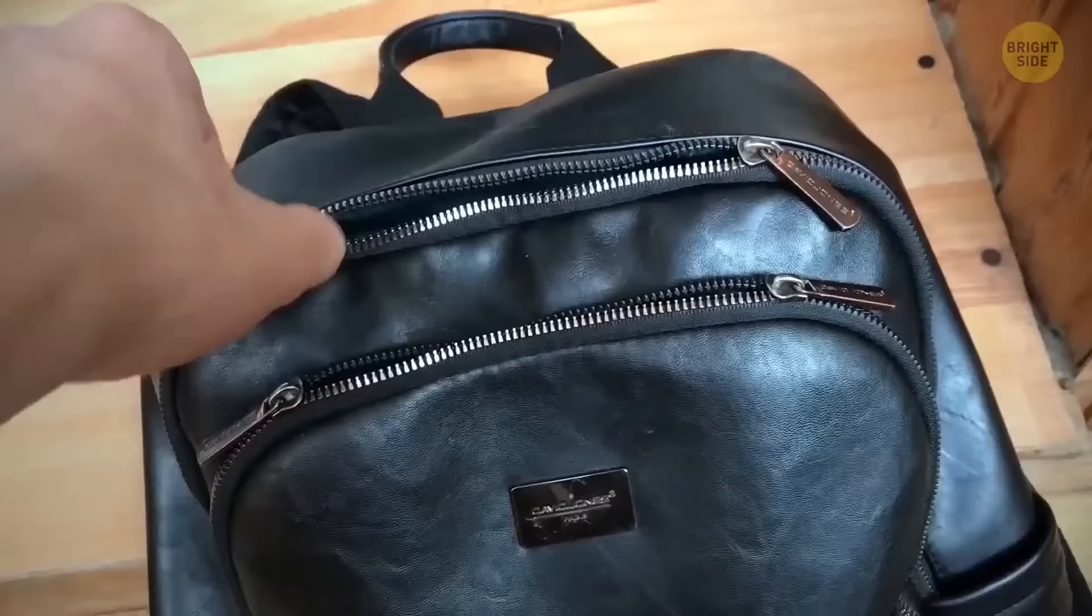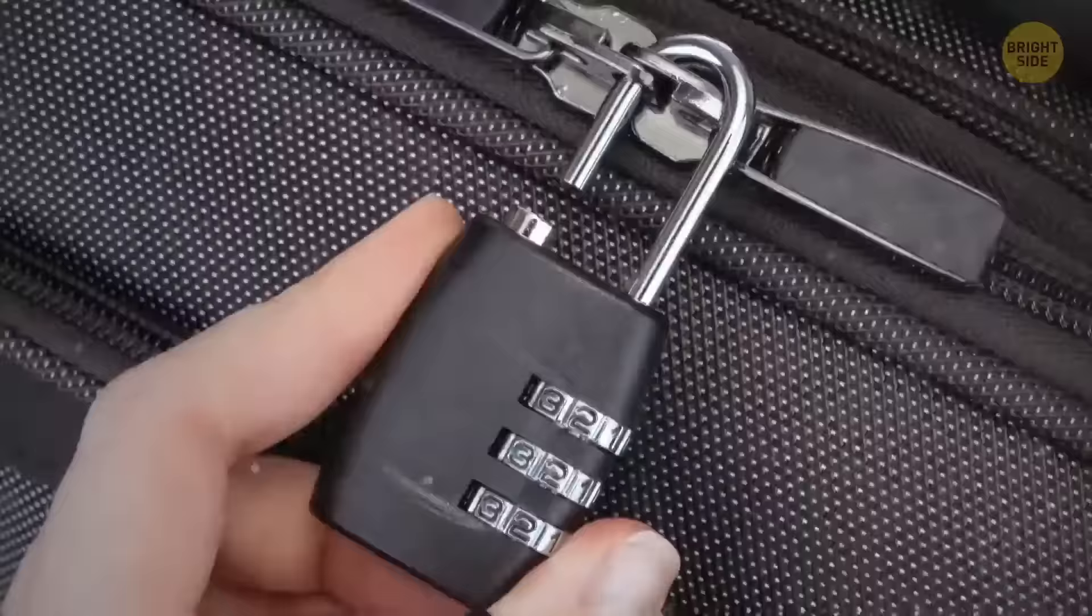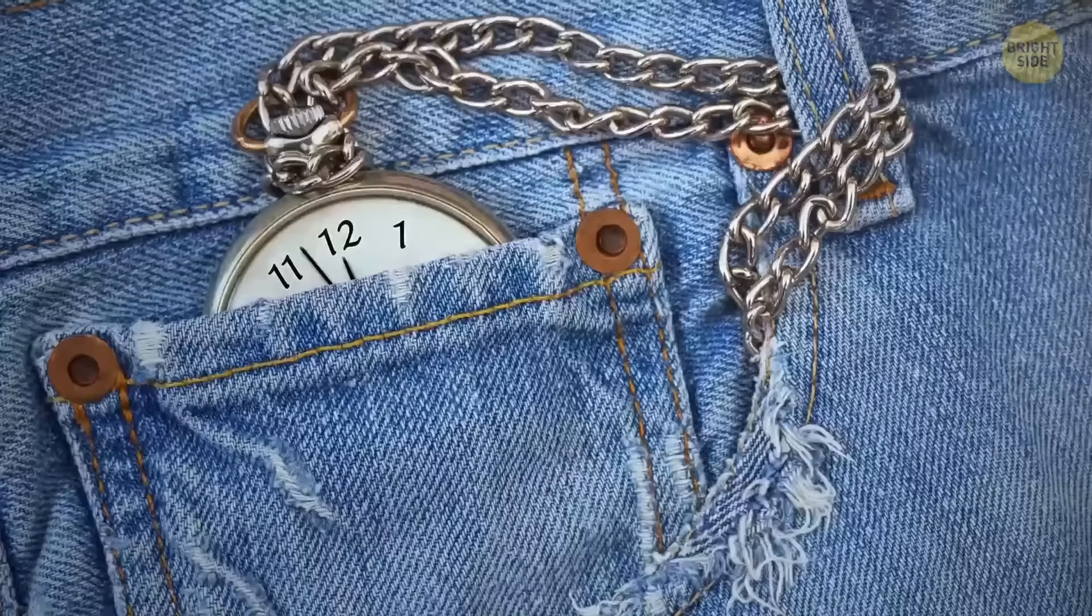If two zips for one section seem a bit too much for you, it's probably time you started using them wisely. It's a great pickpocket proof. You can put on a small lock on those zippers and make sure no one but you can open your backpack. Hide the key in the fifth pocket on your jeans that was originally designed to keep watches safe.